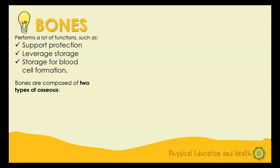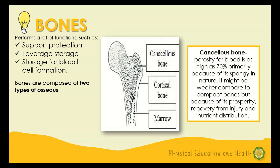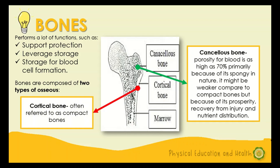For movements, bones are easily recognized as levers pulled by the muscles attached to them. Bones are composed of two types: cancellous bone and cortical bone. Cancellous bone has porosity for blood as high as 70%, primarily because of its spongy structure. It might be weaker compared to compact bone, but because of its porosity it aids in recovery from injury and nutrients distribution. Also known as spongy bone, its function is to allow the movement of minerals and fluids through it.